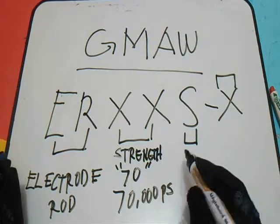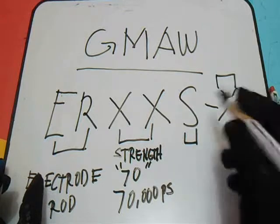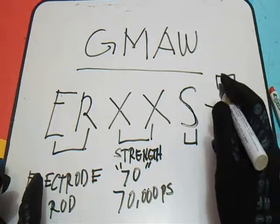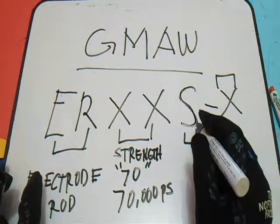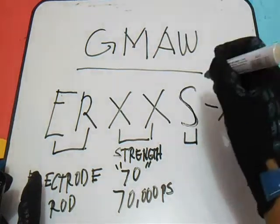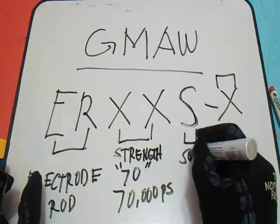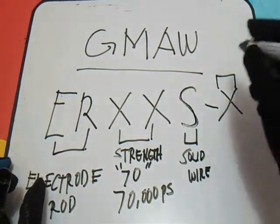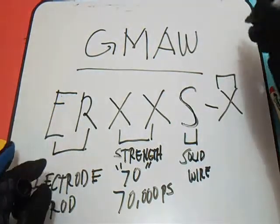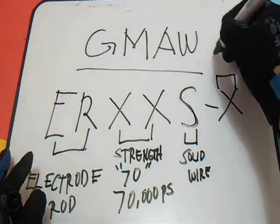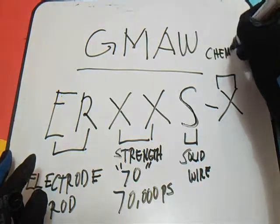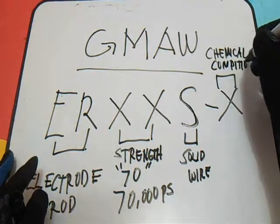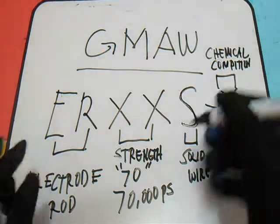So we've covered electrode rod and strength. Next, the S in the GMAW electrode identification system means solid wire. And the final X means chemical composition of the wire.